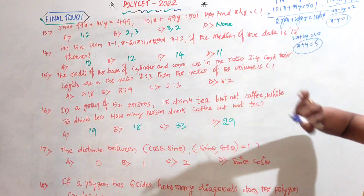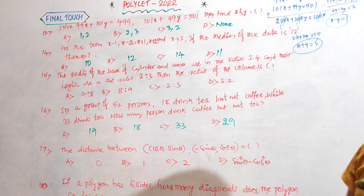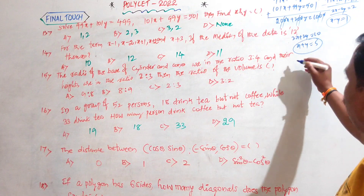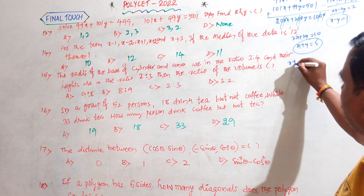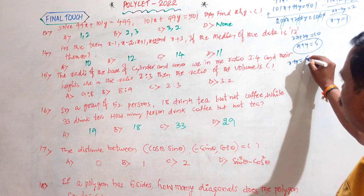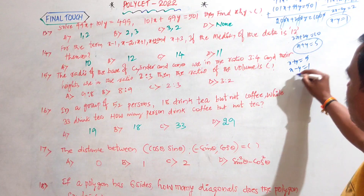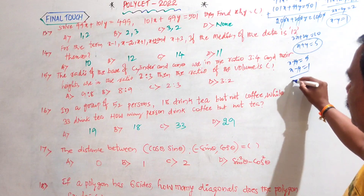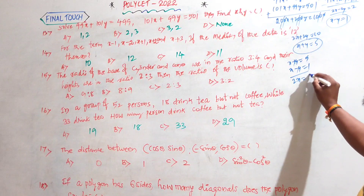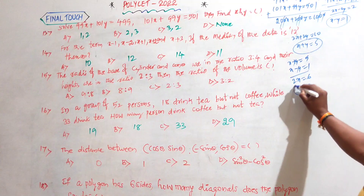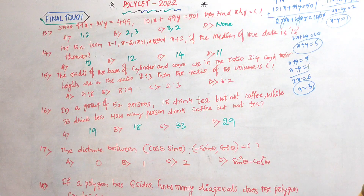So we have x + y = 5 and x - y = 1. Using elimination: adding these two equations gives 2x = 6, therefore x = 3. The first value is x = 3.